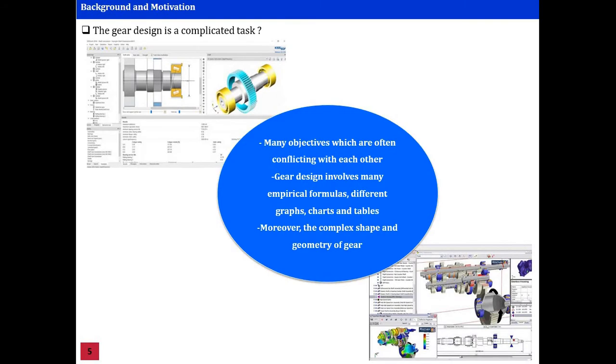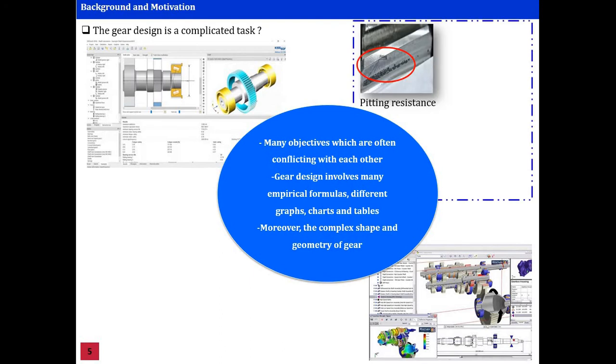For many reasons, the gear design is a complicated task. There are many objectives which are often conflicting with each other. Gear design involves many empirical formulas, different graphs, charts, and tables. Also, the complex shape and geometry of gear leads to a large number of mixed design parameters and highly nonlinear constraints.